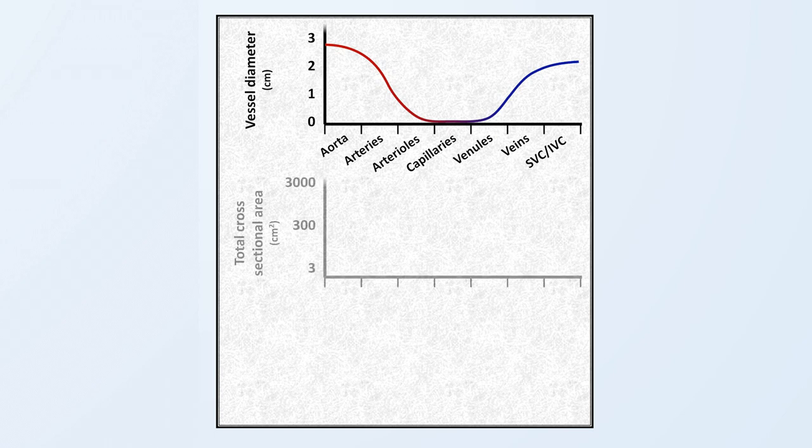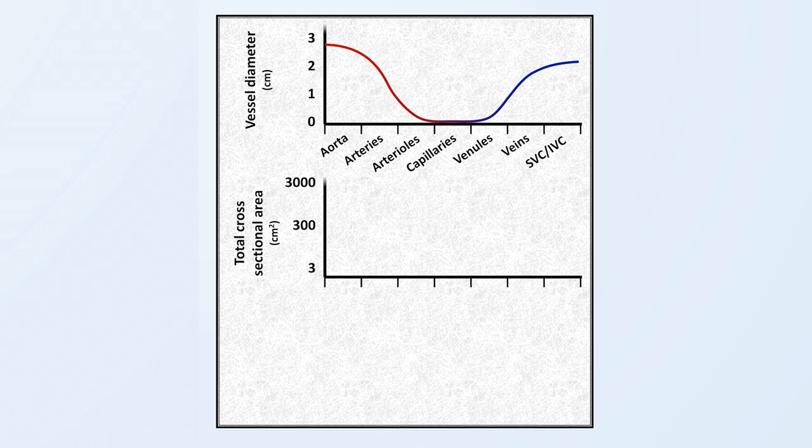Then, we can consider the total cross-sectional area at each stage along the path of circulation. In other words, the average vessel cross-sectional area times the number of vessels for a certain level of blood vessel. With the aorta, there is only one, so the total cross-sectional area is just calculated as pi r squared. But as one moves through the circulation to the arteries, and then arterioles, and then capillaries, the number of individual vessels increases faster than the cross-sectional area of each vessel decreases. This means that the total cross-sectional area is extremely high for the capillaries.